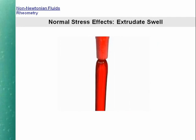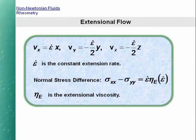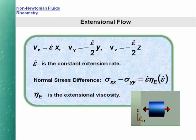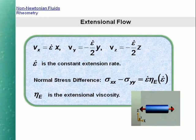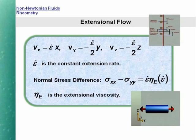We show an example of extrudate swell for a dilute solution of polyacrylamide in a mixture of glucose syrup and water. We now pass on to consider another important aspect of non-Newtonian behavior, namely that associated with extensional flow. In this case, the ratio between stress and rate of strain is called the extensional viscosity. For Newtonian liquids, the extensional viscosity is 3 times the shear viscosity, a result first obtained by Trouton in 1906.